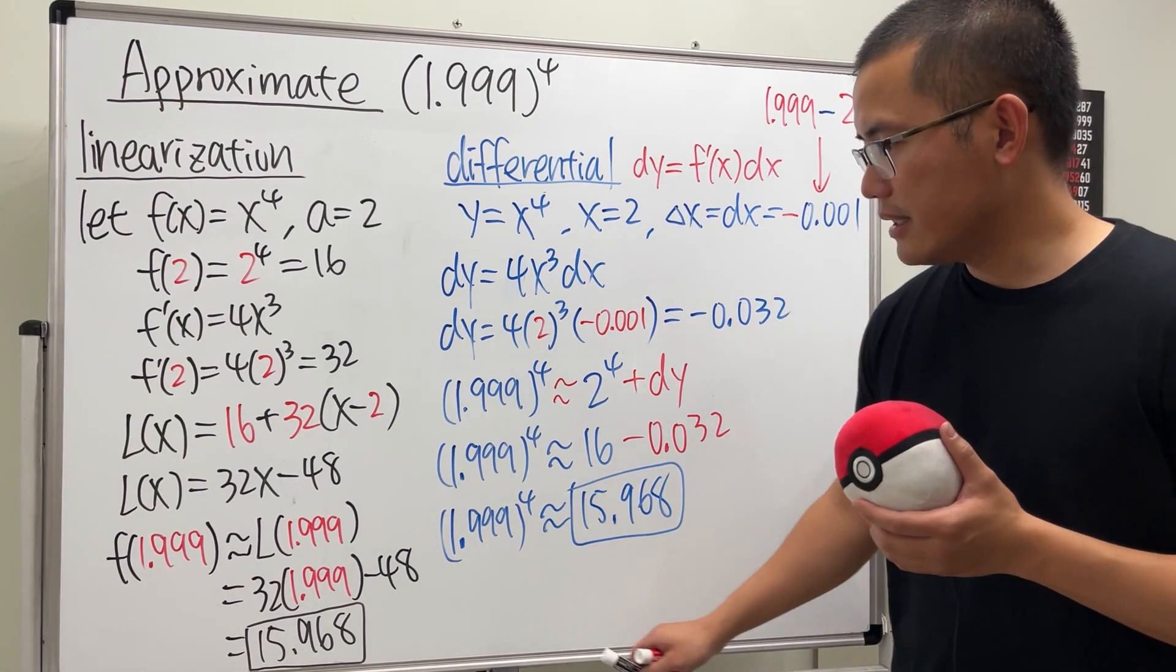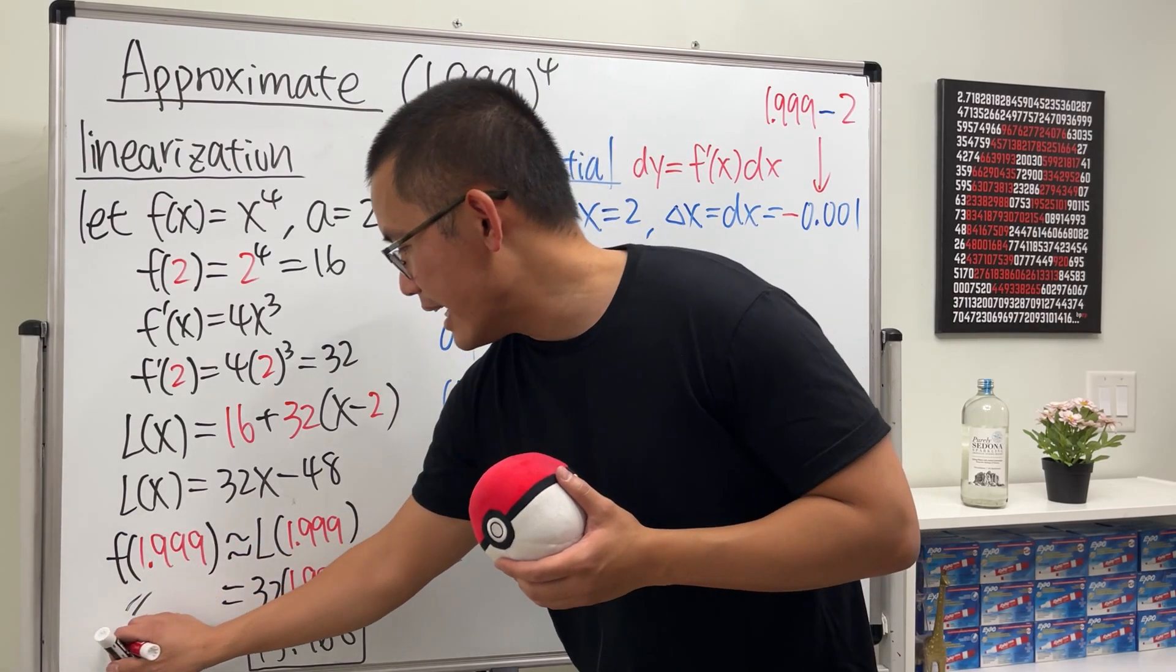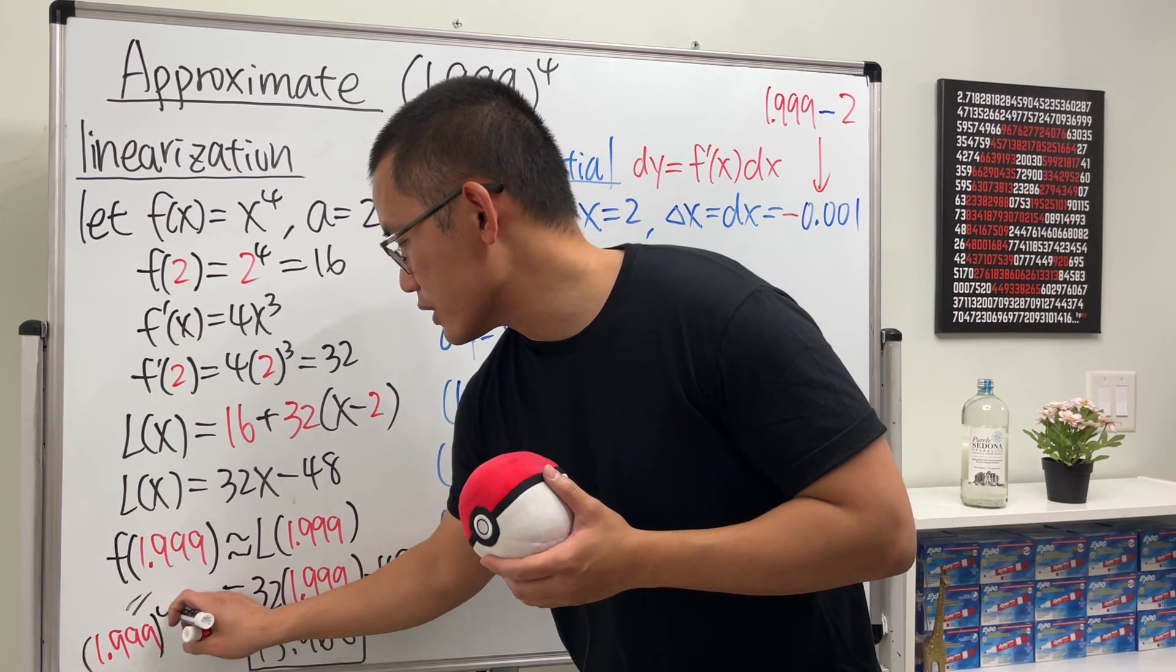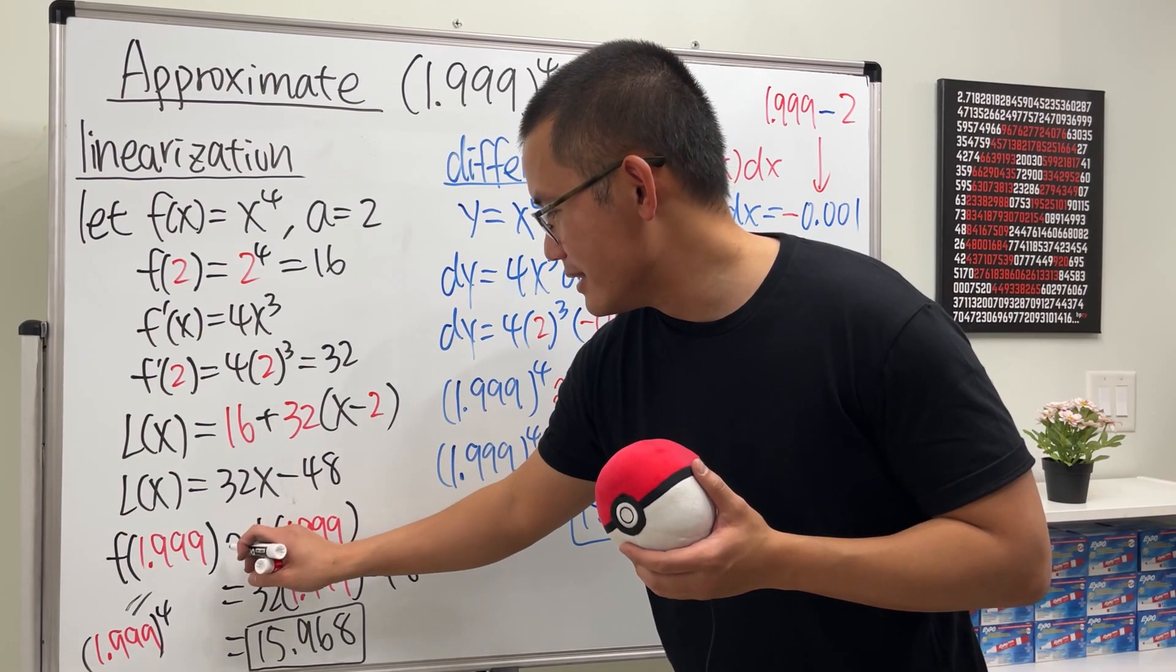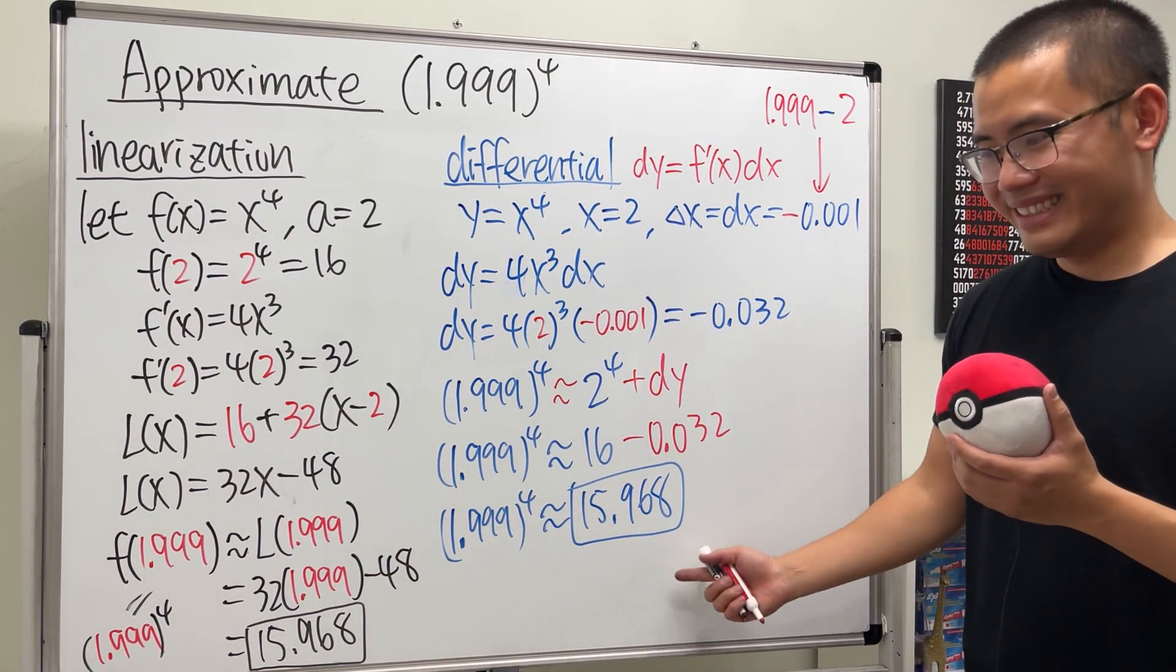Again, earlier f(1.999) is the same as 1.999^4, so perhaps I'll fix this a little bit. This is the approximation symbol. That's how I'll do it. That's it.